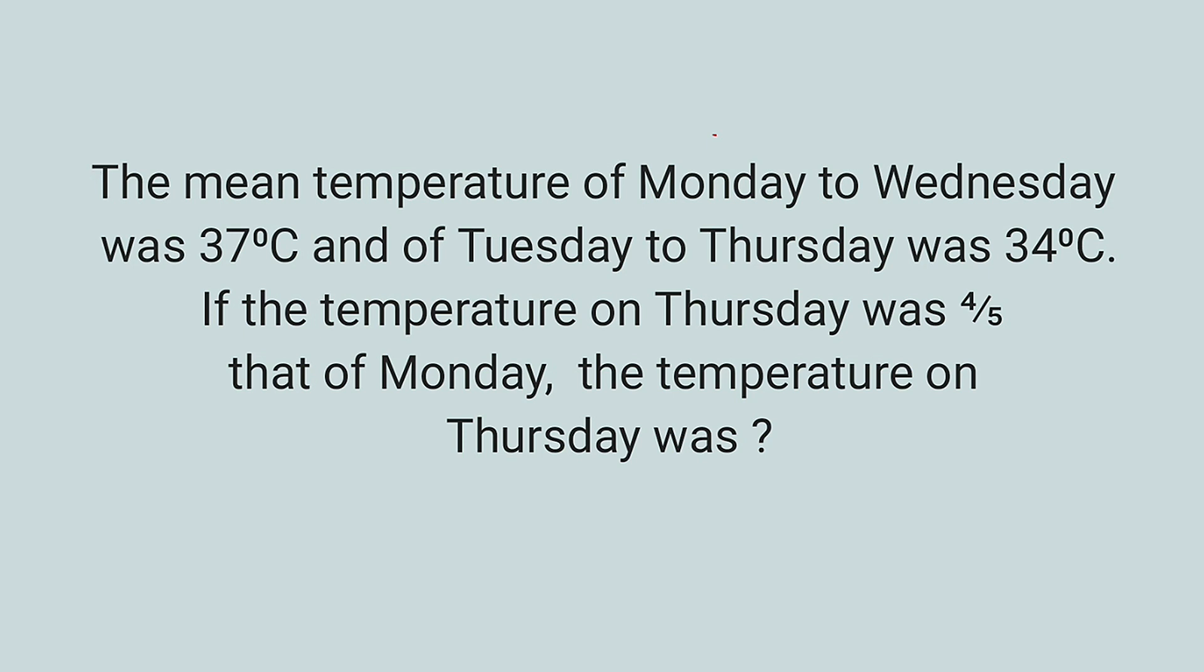The question reads: the mean temperature of Monday to Wednesday was 37 degrees Celsius, and Tuesday to Thursday was 34 degrees Celsius. If the temperature on Thursday was 4 over 5 that of Monday, then the temperature on Thursday was?